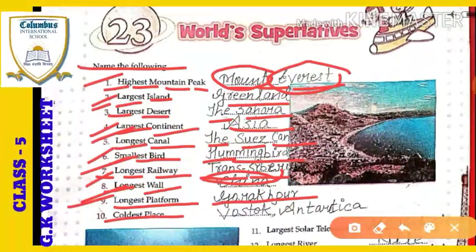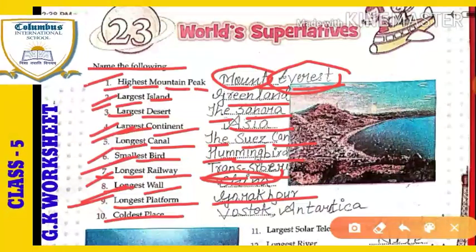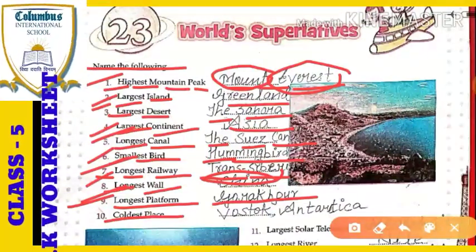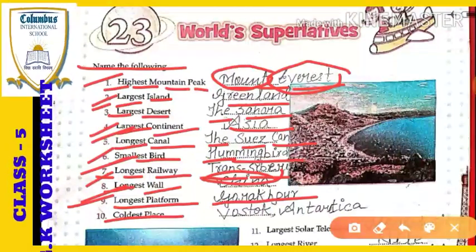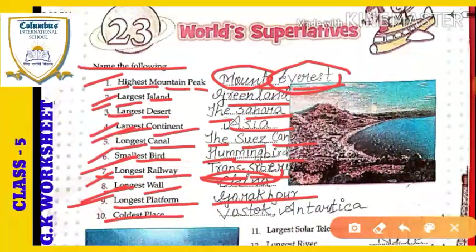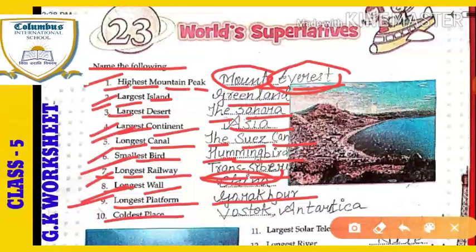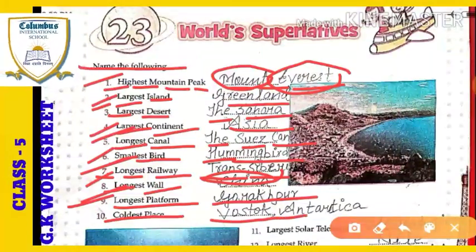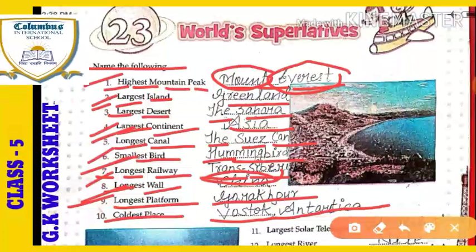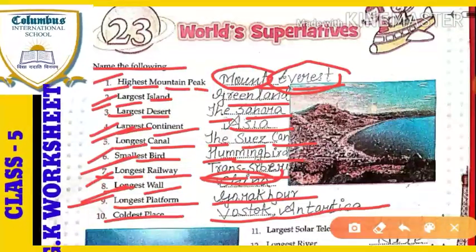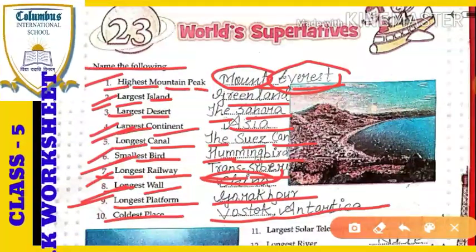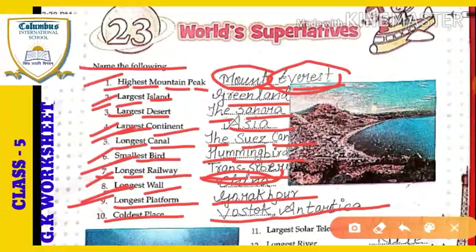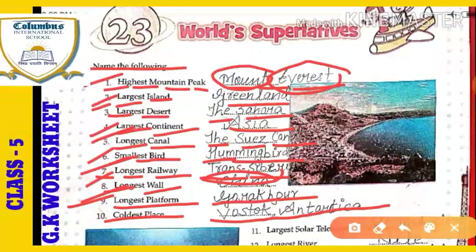Next: the coldest place. Which place is known as the coldest place? That is called Vostok, which is situated in Antarctica. Vostok is in Antarctica — it is the coldest place of the world.